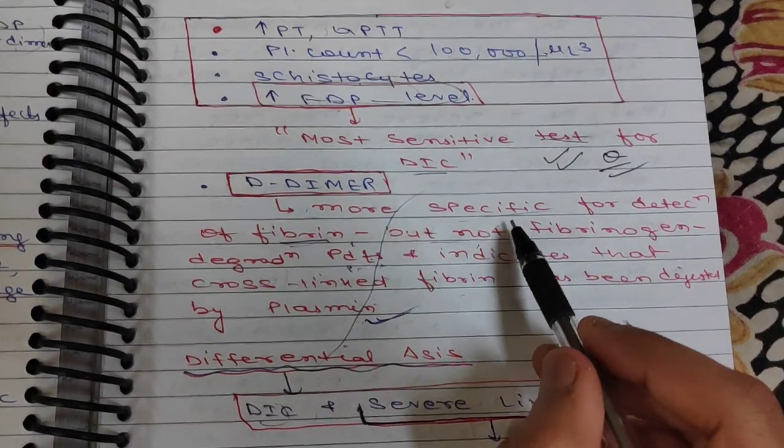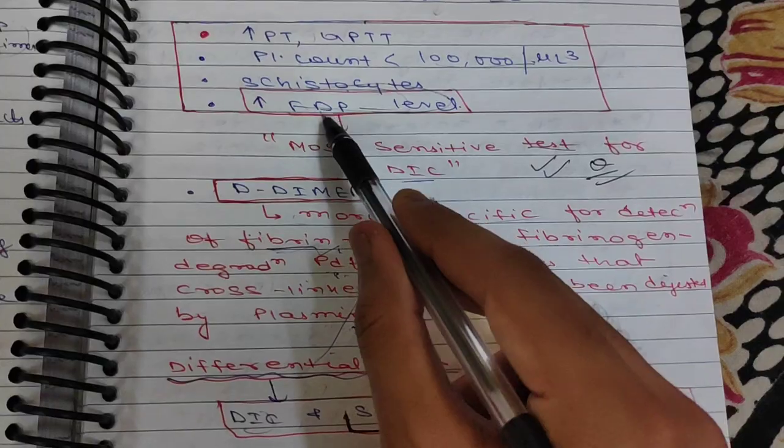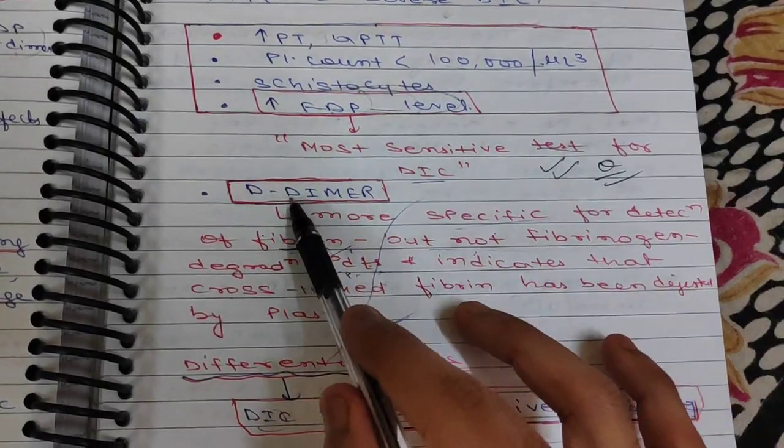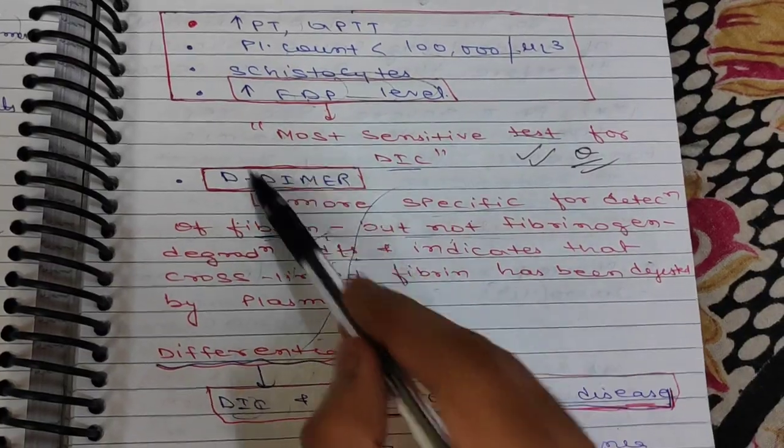There is another test, D-dimer. It is more specific for detection of fibrin, not fibrinogen degradation products. FDP is for fibrinogen degradation products. D-dimer is for fibrin and indicates that cross-linked fibrin has been digested by plasmin.